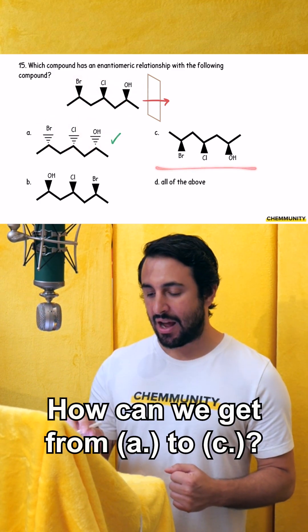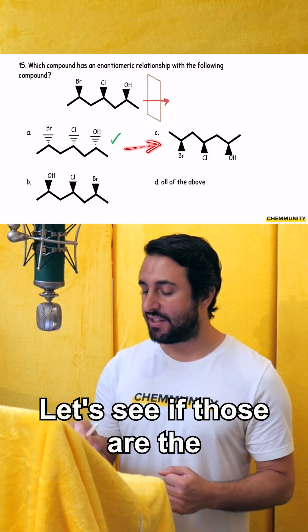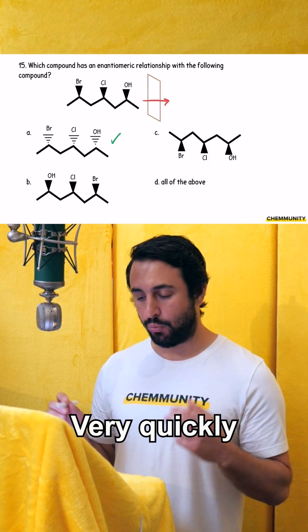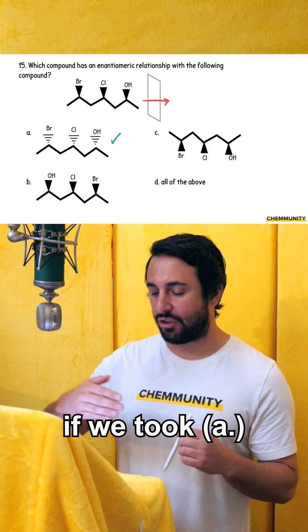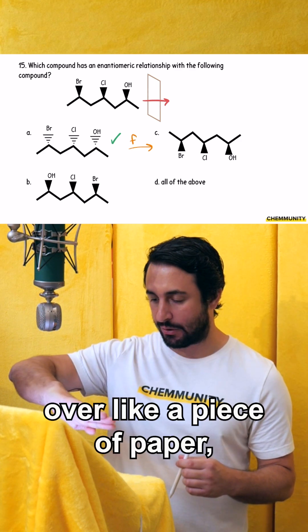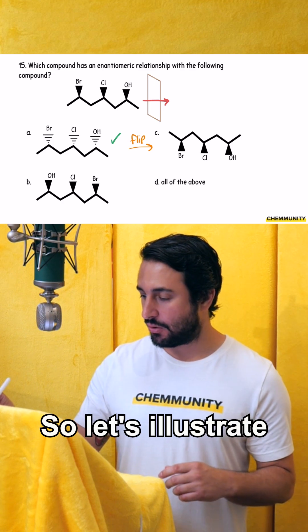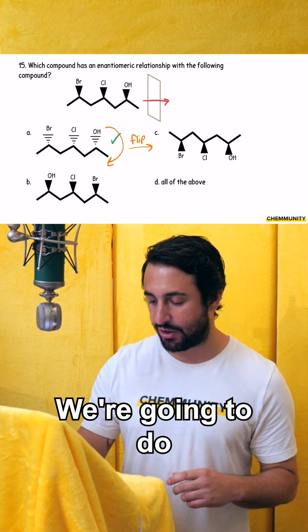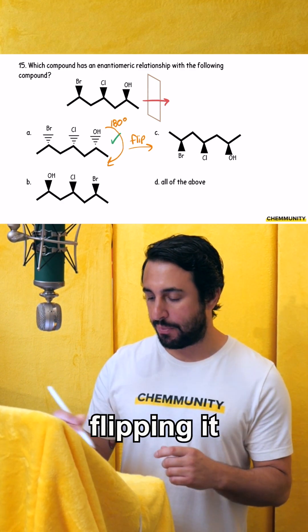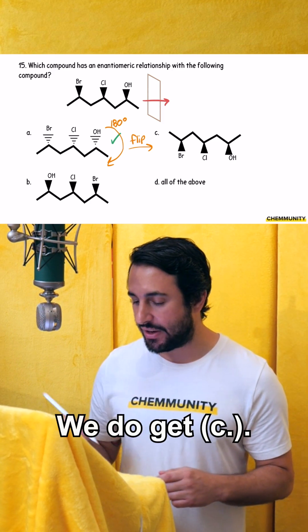Now, let's look at C. How can we get from A to C? Let's see if those are the same molecule. Very quickly, we can see that if we took A and we flipped it over like a piece of paper, just flip it over onto the other side. Let's illustrate that this way. We're going to do 180 degrees, flipping it like a piece of paper. We do get C.